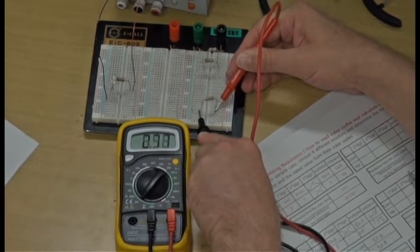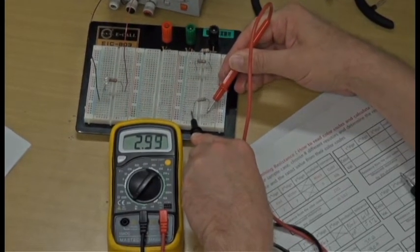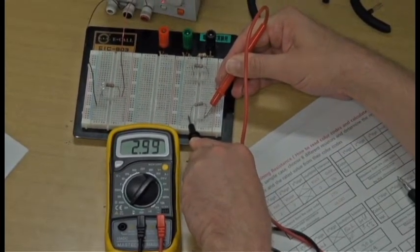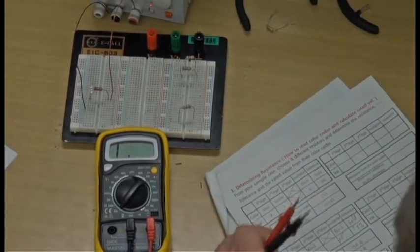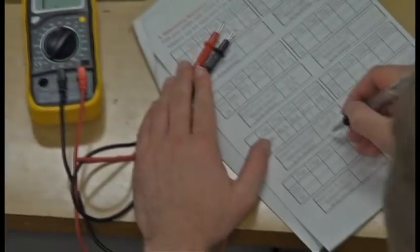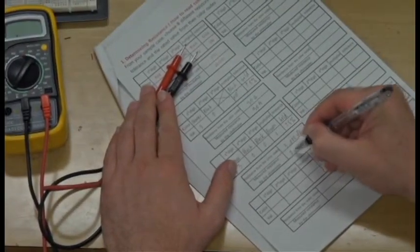Measuring, we get 2.99 kilo ohms, which again is within the expected tolerance. Write the value down in your assignment sheet, and we're done.